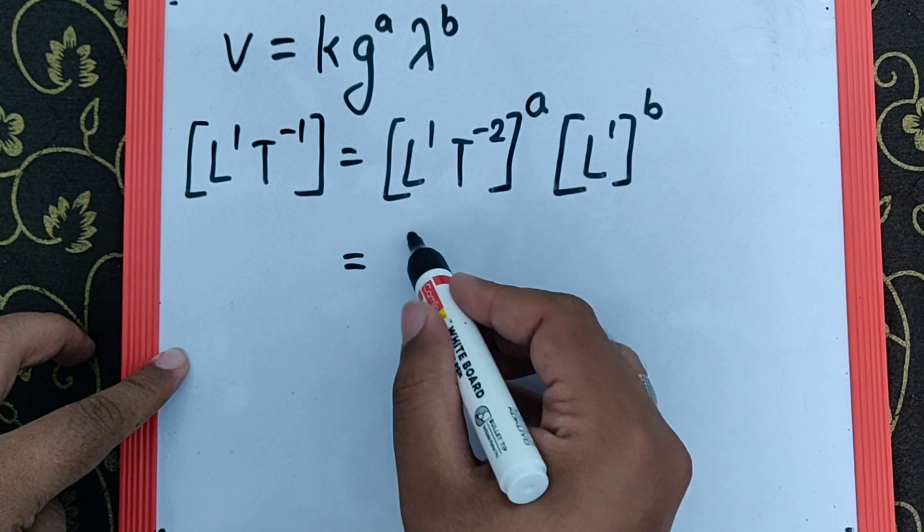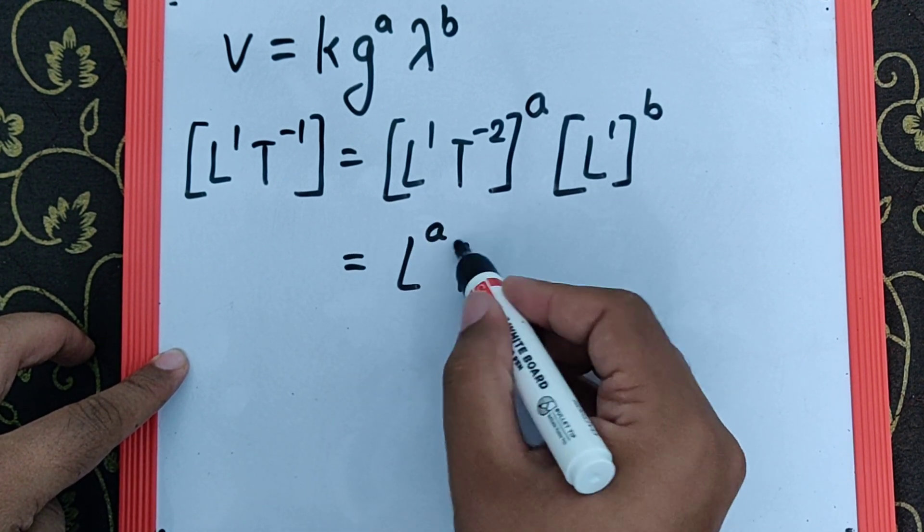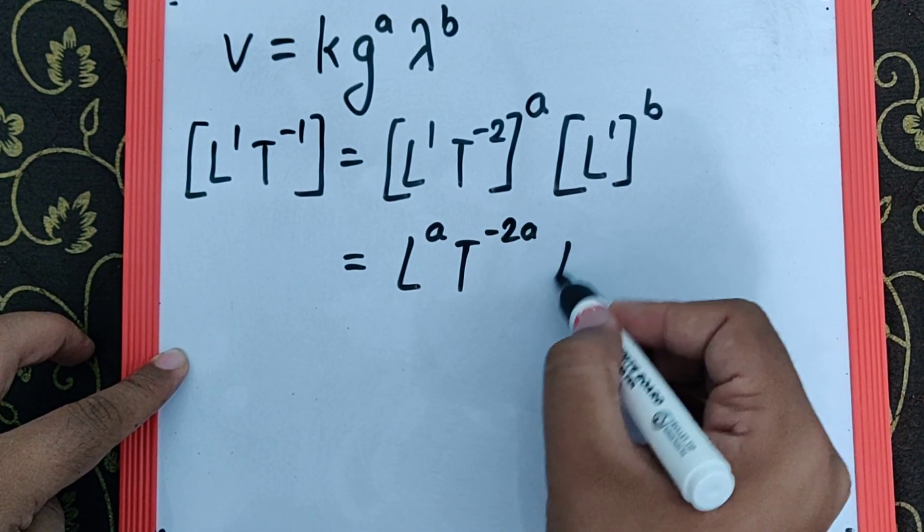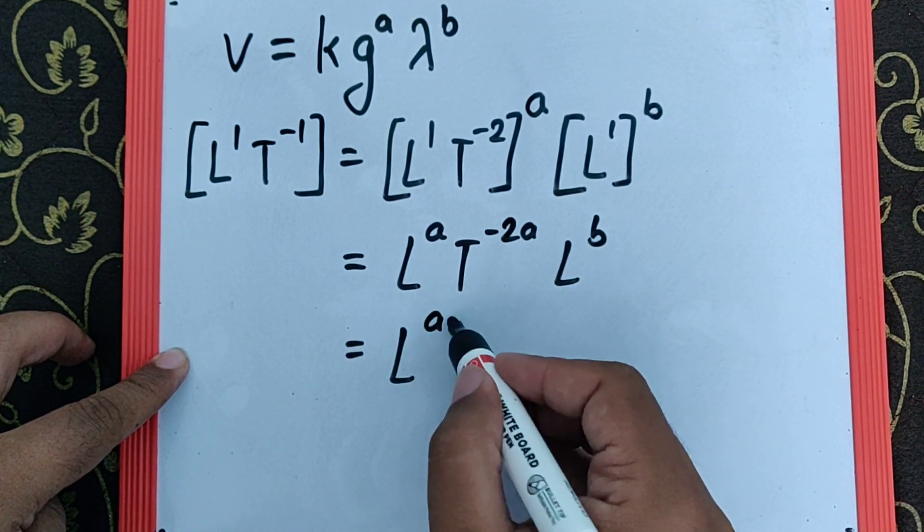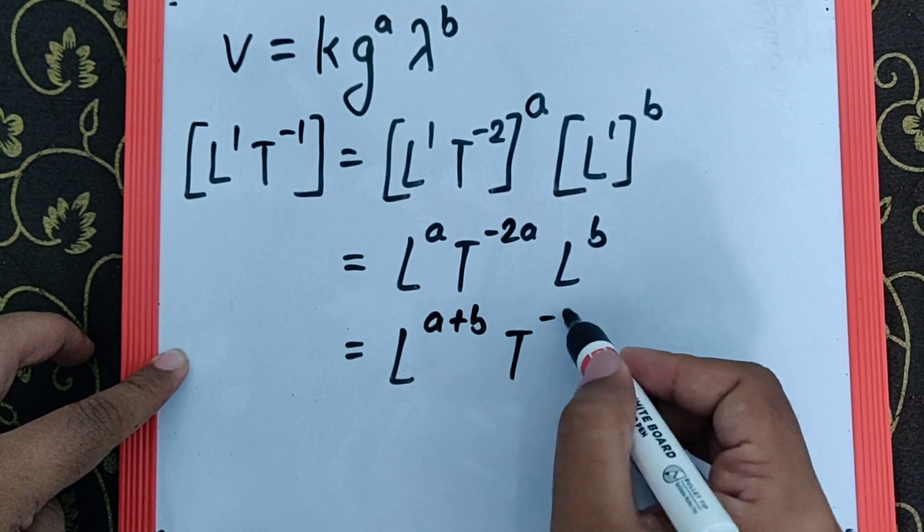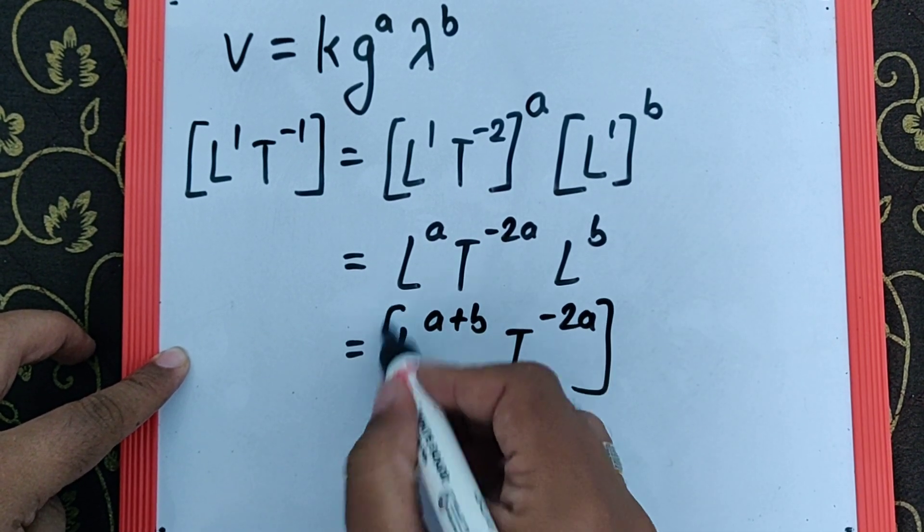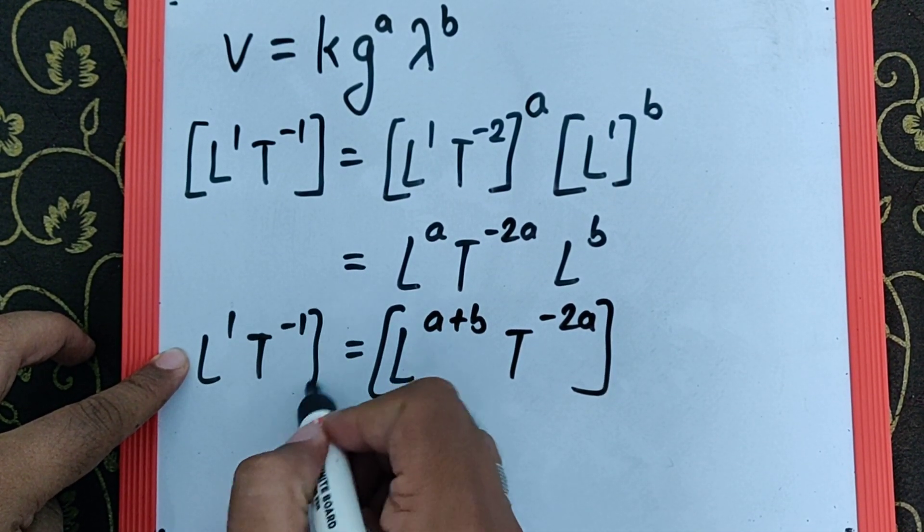This makes the equation L^A T^-2A and L^B, which means L^(A+B) T^-2A is to be equated with L^1 T^-1.